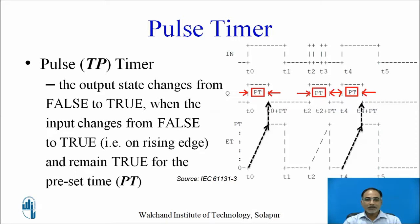The output state of a pulse timer changes from false to true when the input changes from false to true — that is, on the rising edge of the input. At instant T0, the input changes from 0 to 1, and at the same time the timer output Q also changes from 0 to 1. The output remains true for the preset time PT, so the output remains true up to T0 plus PT, giving a pulse width of PT duration.